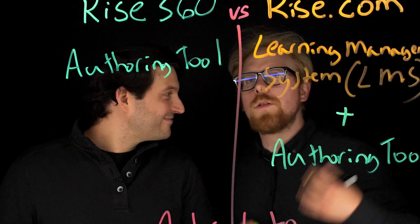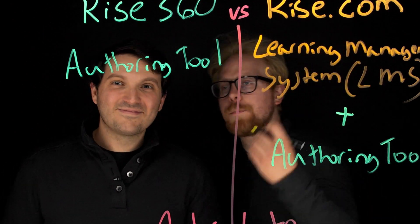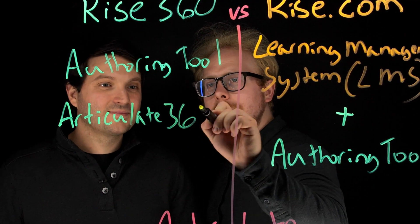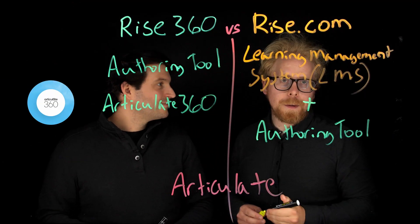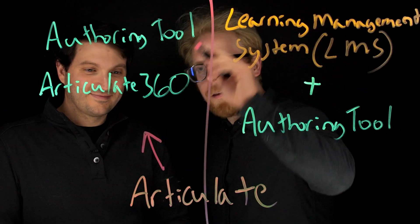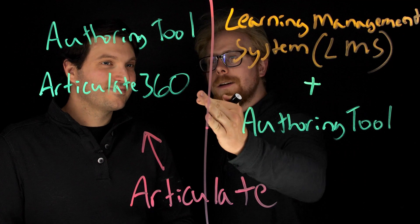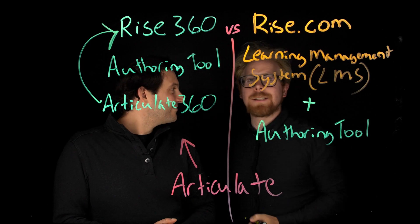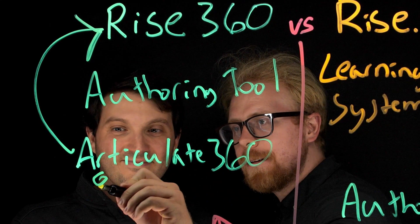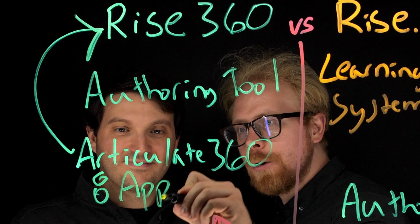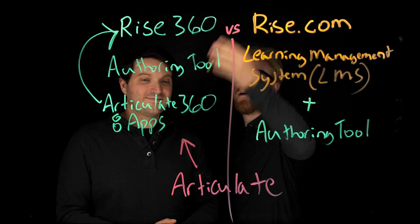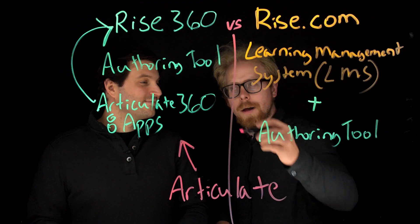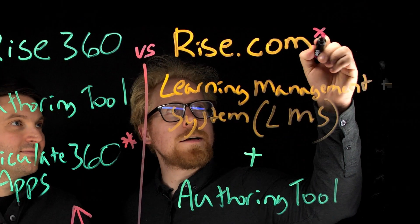Here's the drama. Those of you who have heard of Articulate have probably heard of Articulate360. Articulate360 is not the same as Articulate — Articulate is the company, and Articulate owns Articulate360. Articulate360 has RISE360 as one of its eight apps. There are eight apps that make up Articulate360. RISE360 is one of those apps, but RISE.com is not. Articulate sells two products: Articulate360 and RISE.com.